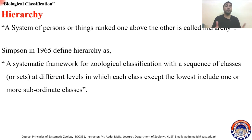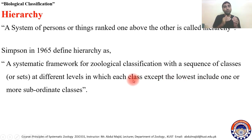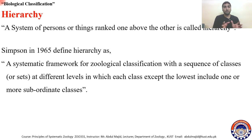In zoological hierarchy, animals are classified in a sequence of classes or sets at different levels, in which each class except the lowest includes one or more subordinate classes. The lowest category is subspecies or species, so there is no further group below it. Subspecies are subordinated to species, species to genus, genus to family, families to orders, orders to classes, classes to phyla, phyla to kingdom, and kingdom to domain.